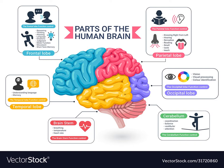This slide shows different parts of the brain and what they're responsible for. The frontal lobe is responsible for executive function — reasoning, thinking, planning. The parietal lobe controls sensation and hearing. The occipital lobe controls vision. The cerebellum controls coordination and balance. The brainstem controls breathing, temperature, and heart rate. The temporal lobe helps with memory, emotions, and understanding different languages.